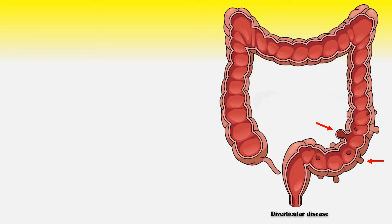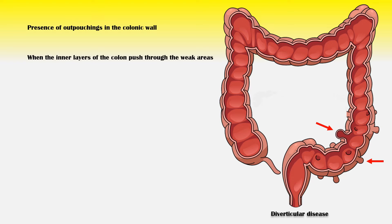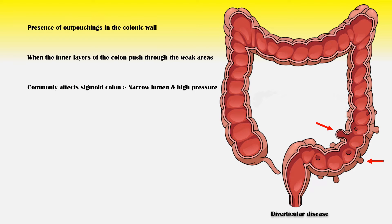Diverticular disease is characterized by the presence of outpouchings in the colonic wall. It occurs when the inner layers of the colon push through the weak areas in the outer muscular layers. It commonly affects the left colon, especially the sigmoid colon, because it has a narrow lumen and a high intraluminal pressure.